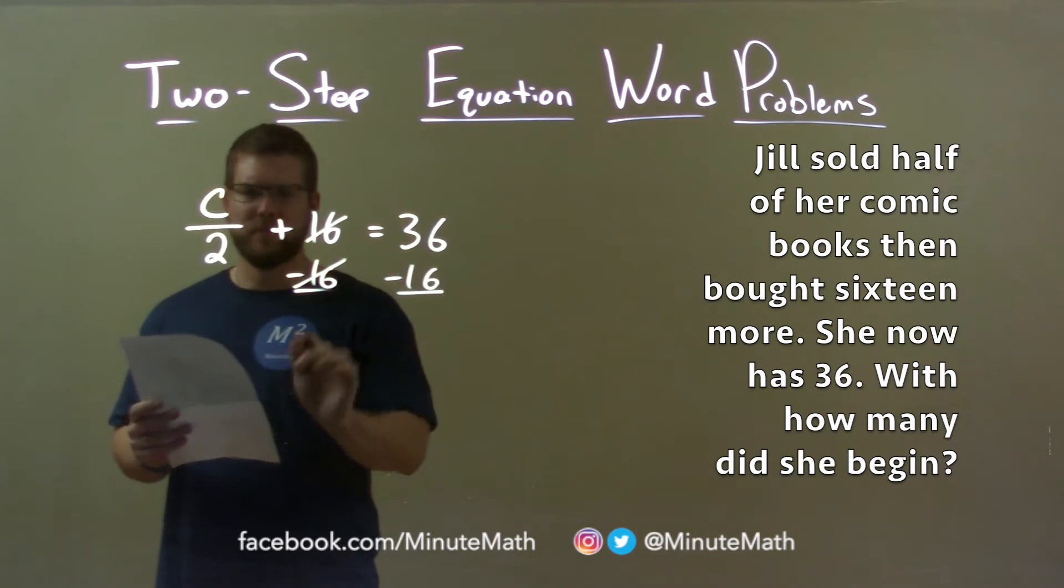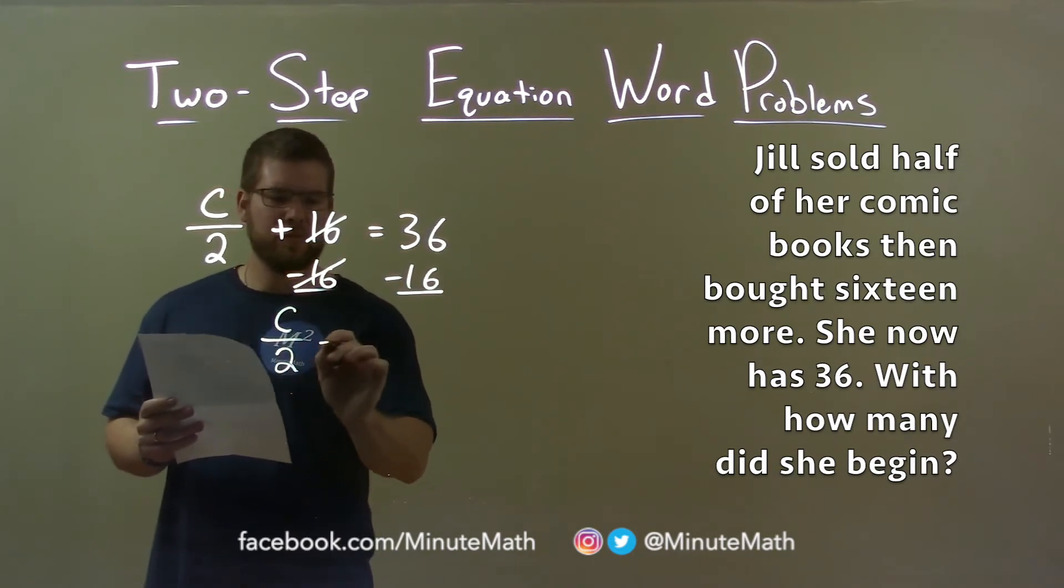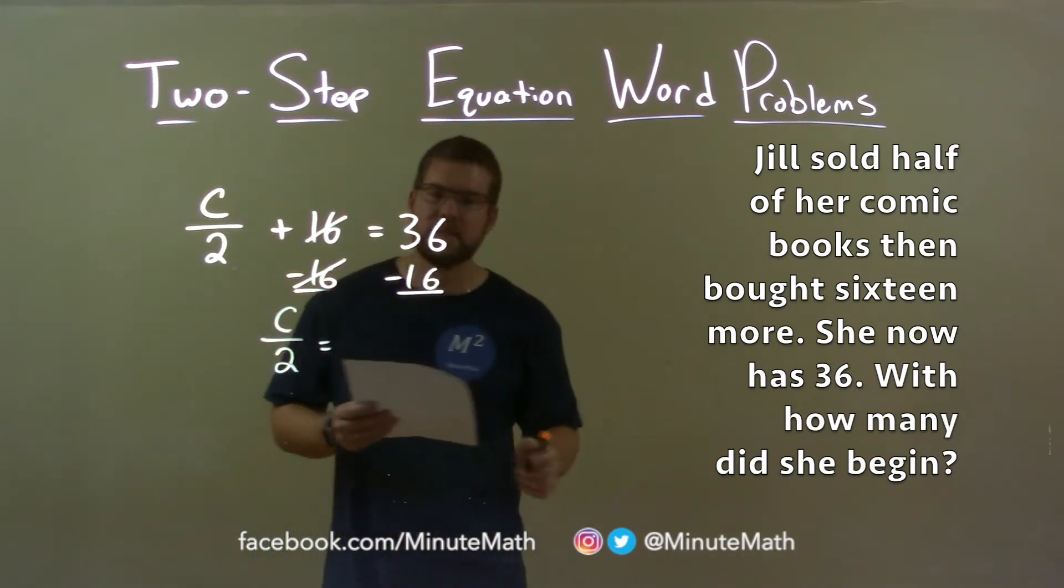16 is canceled on the left, giving me C over two left over. 36 minus 16 is 20.